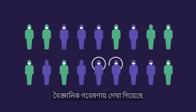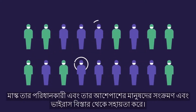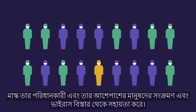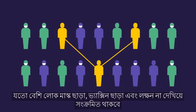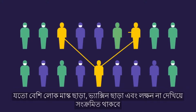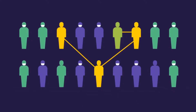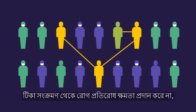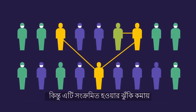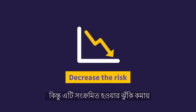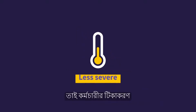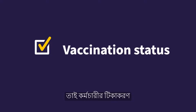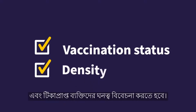Scientific research proves masks help protect the wearer and those around them from infection and viral spread. The more unmasked, unvaccinated, or infected people without showing signs, the more likely the disease will spread. Vaccination does not provide immunity from infection, but it does decrease the risk of getting infected and makes it less severe when you do. That's why the vaccination status of the employee and the density of vaccinated individuals are important risk factors to consider.